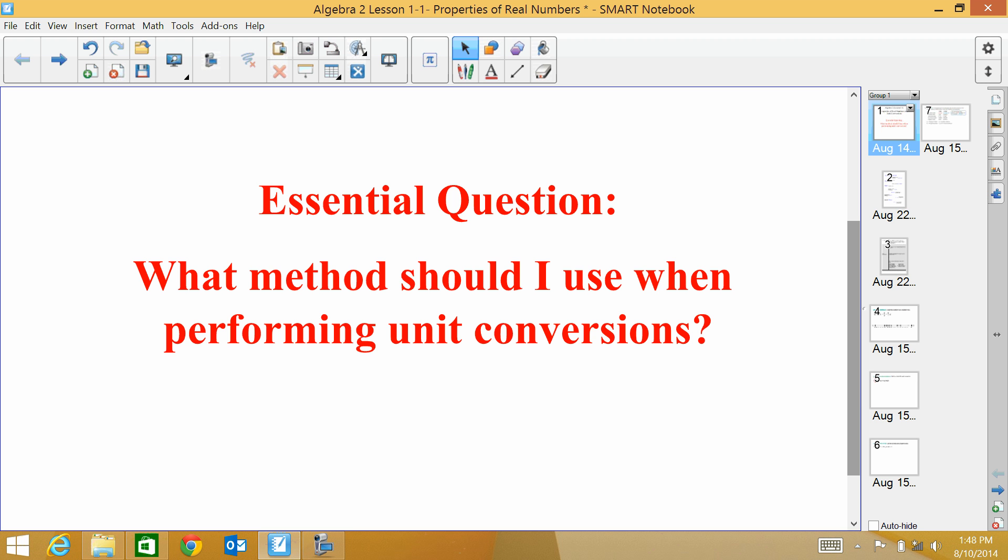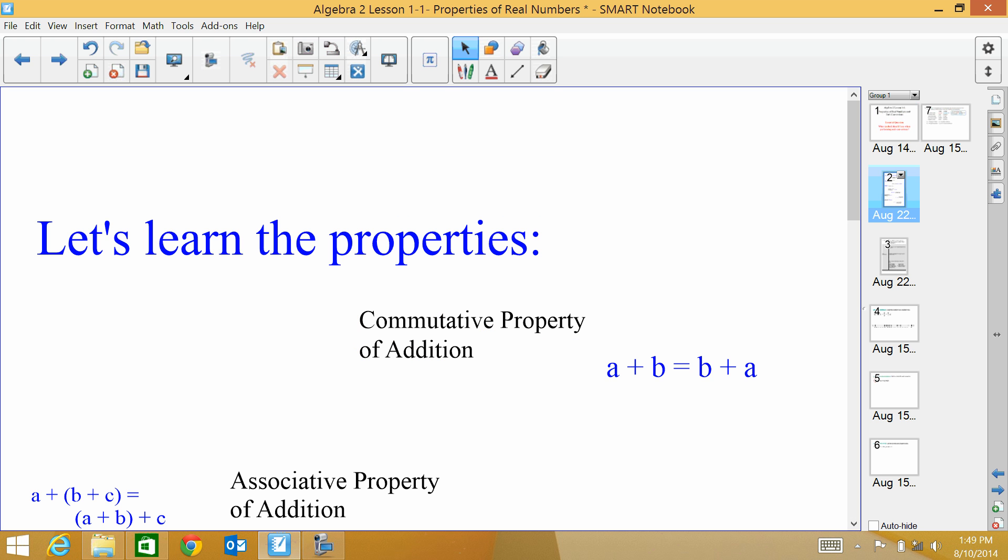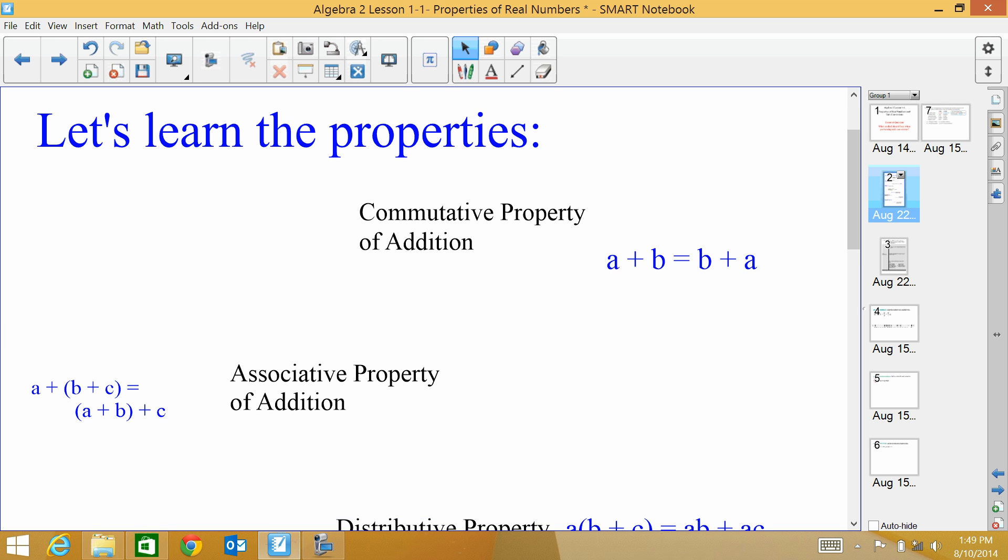That's the meat of what we're going to be talking about today, but we do also need to know the properties of real numbers. So I'm just going to review those with you really quickly, and you can take notes over the examples. So first, here are some of the properties of real numbers. The first one is the commutative property of addition, and here's an example of that right here. A plus B equals B plus A.